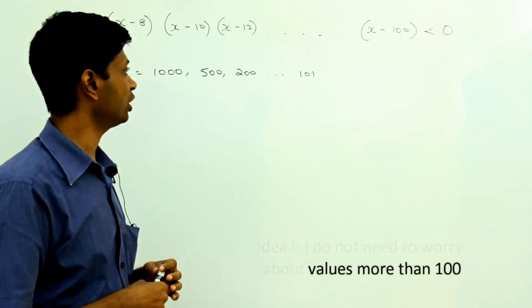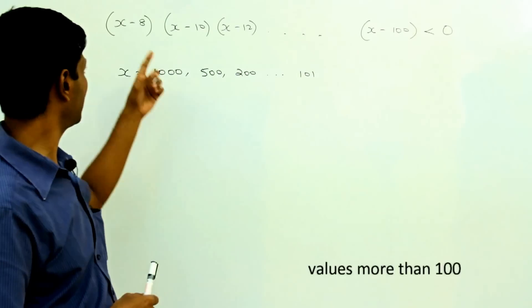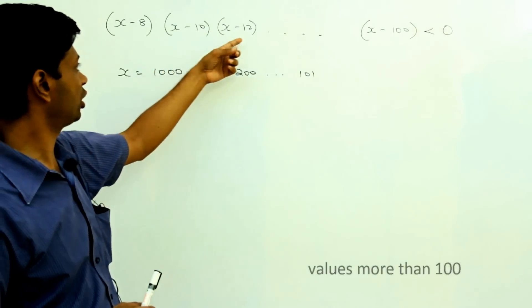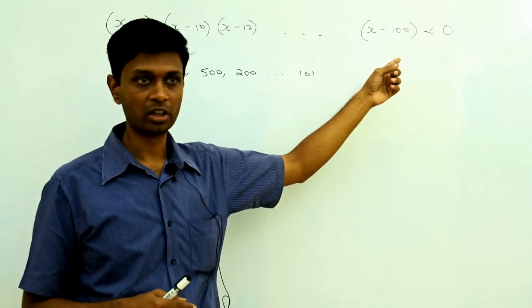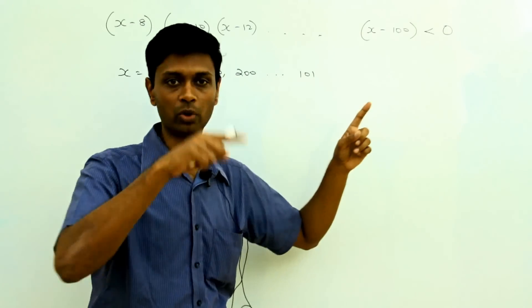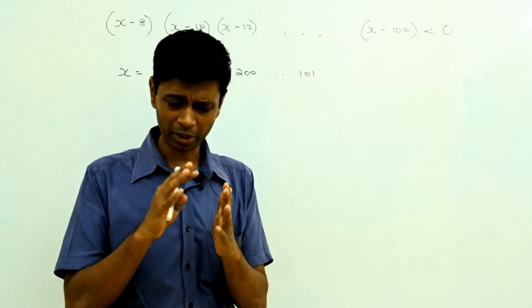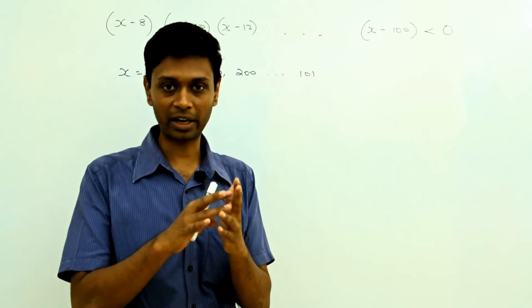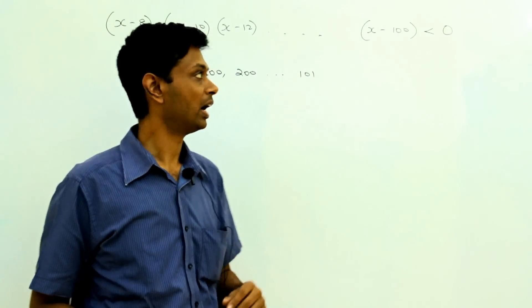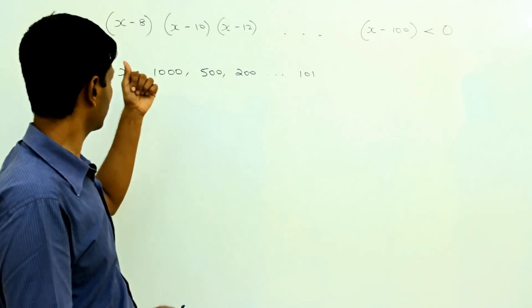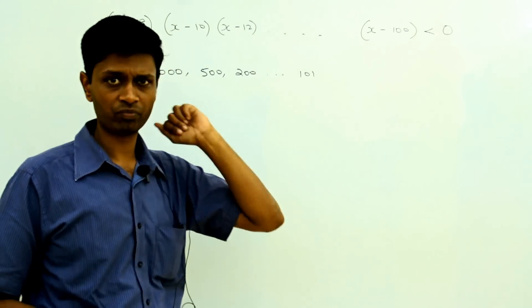Now even within 1 to 100, values 8, 10, 12, 14 and all even numbers in that range — the product will be 0. So I do not have to worry about 8, 10, 12, 14 and so on. I have to worry about the remaining numbers from 1 to 100.